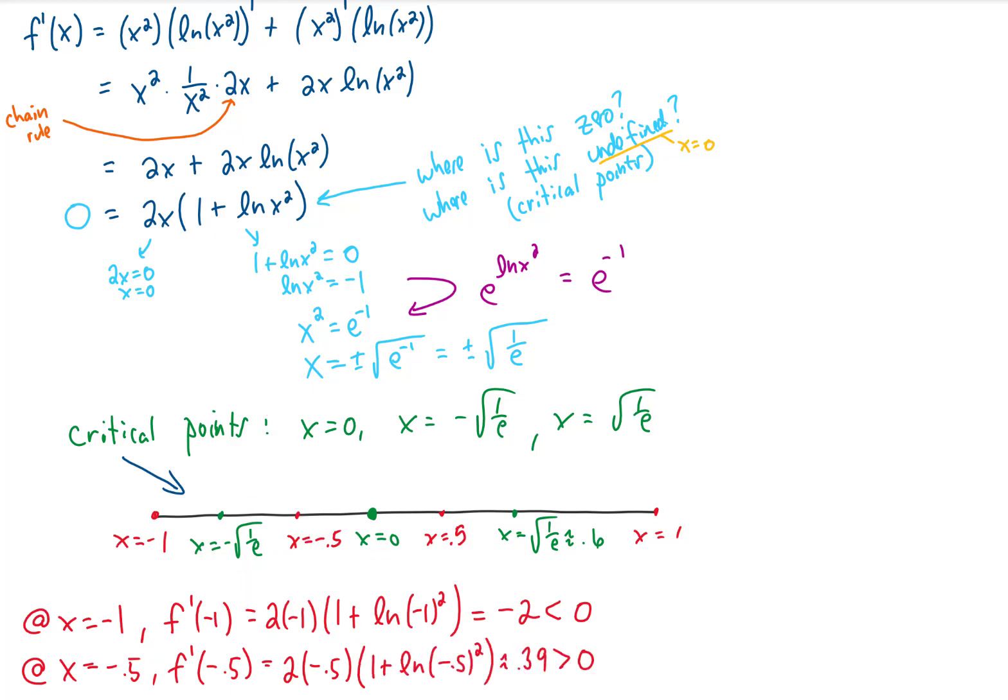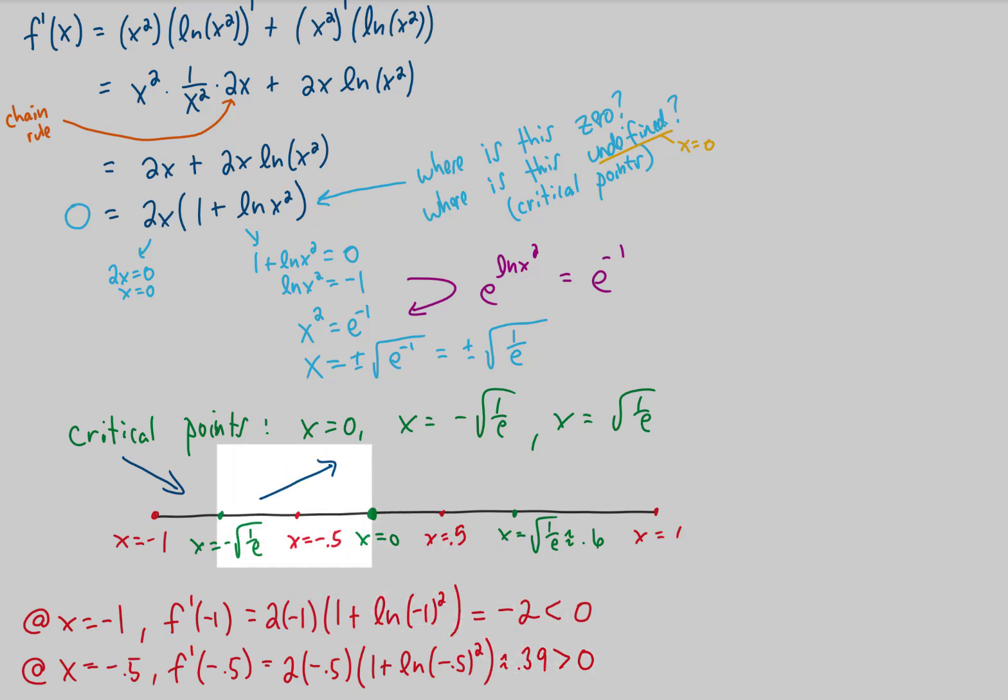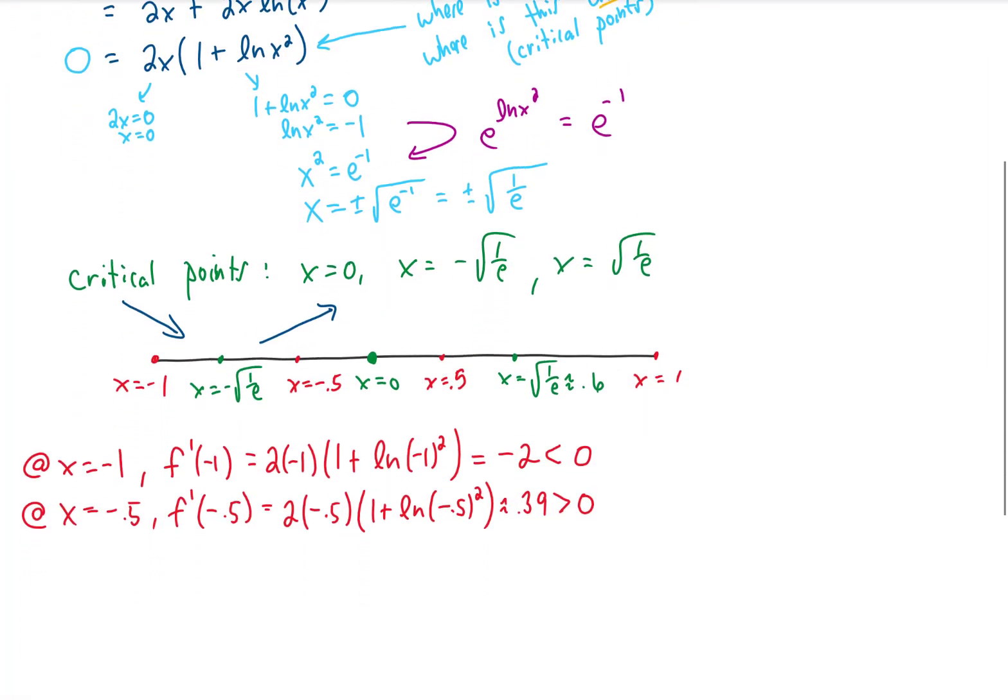At our test point x equals negative 0.5, I'm getting that the value of our first derivative is positive, therefore our function is increasing on that interval. Let's make some room and keep going with this.